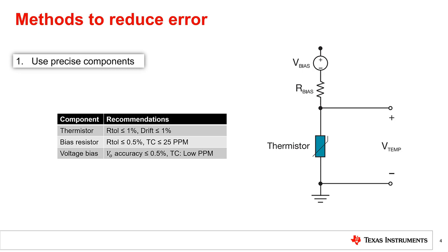If these components drift across temperature or have a large tolerance, then the circuit's output going to the ADC will vary from the expected values. This will have a large impact on the temperature accuracy, so in order to maximize accuracy, it is highly recommended to use precise components with low tolerance and PPM values.